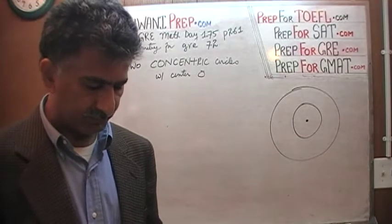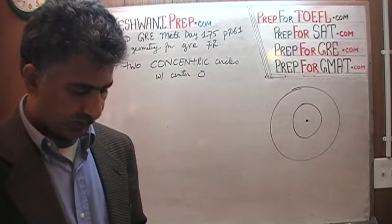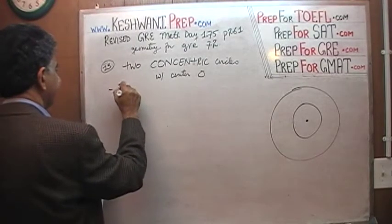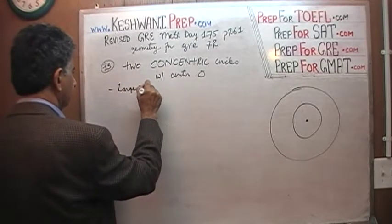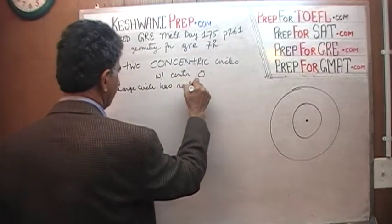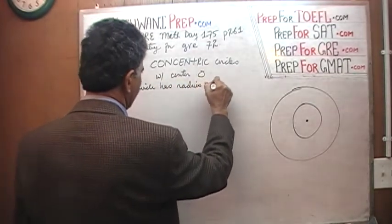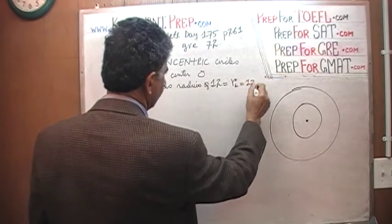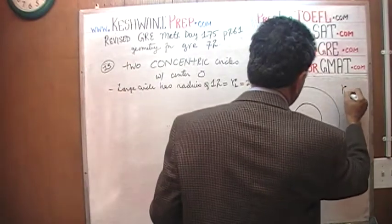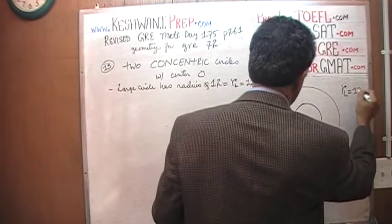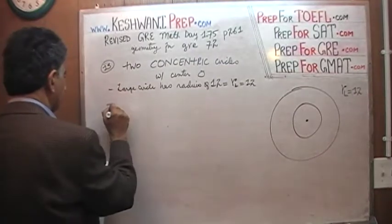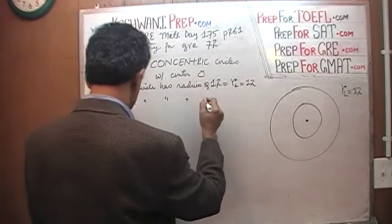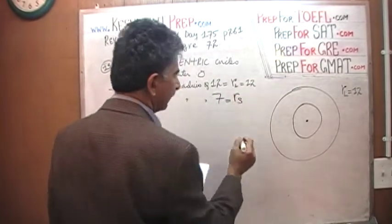The large circle we are told has a radius of 12. The large circle has radius of 12. Let's call it R with a subscript L which is 12. Let's make a note here. R subscript L equals 12. Similarly, a small circle has a radius of 7. Let's call it R with subscript S.